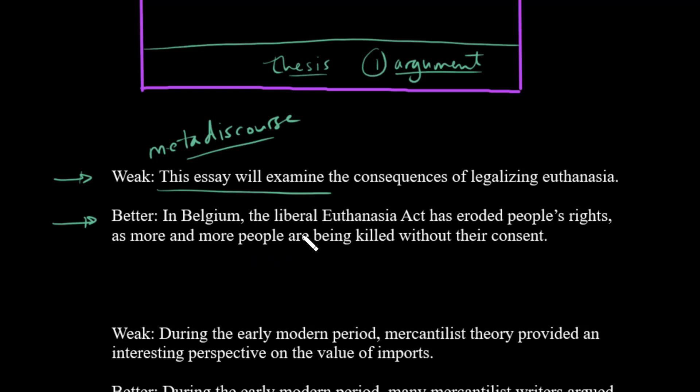The better version reads: 'In Belgium, the Liberal Euthanasia Act has eroded people's rights as more and more people are being killed without their consent.' You can see that this is definitely arguing a particular position — it's arguing against euthanasia and saying there's a problem with consent. It can still be more specific, but it's quite clear what the argument is. Try to distinguish between a topic, which is the first example, and an argument, which is the second.